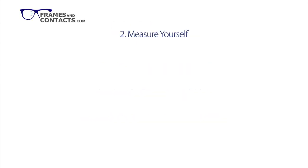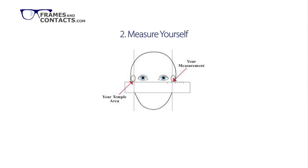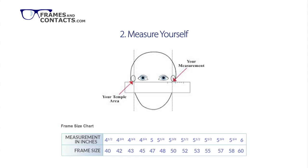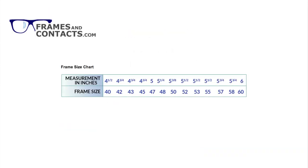Number two: measure yourself to determine your frame size. For those who do not have a previous pair available for reference, follow these steps to measure yourself. Looking into your mirror, hold a ruler so it is lined up with your temple. Measure in inches the distance between your left and right temples. Use the chart below to convert your measurement to a frame size. To convert from inches to millimeters, please multiply by 25.4.